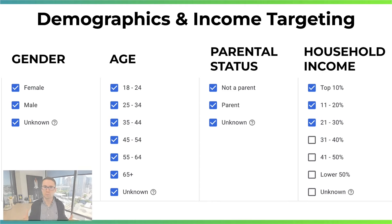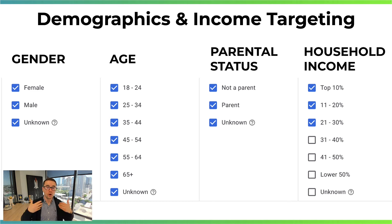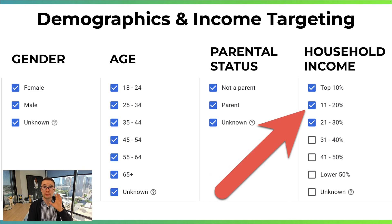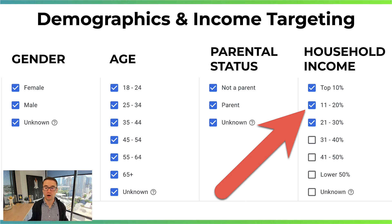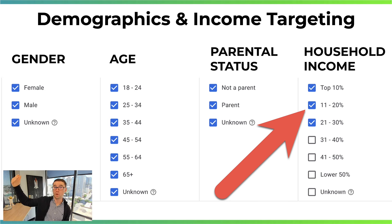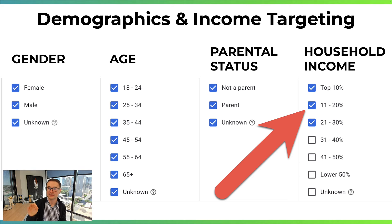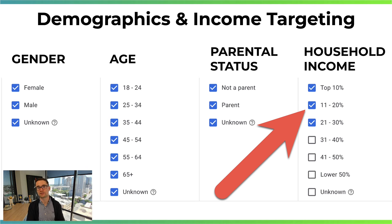When it comes to demographics, this depends on your offer — gender, age, parental status. But when it comes to household income, we've found this is a really powerful tool to target coaching and consulting ideal clients. Typically, if you have a high-ticket offer, you'll want to target the top 30% household income, maybe even top 20% or top 10%, depending on how high-ticket the offer is. This helps you get higher quality leads from day one before you even start the additional targeting.